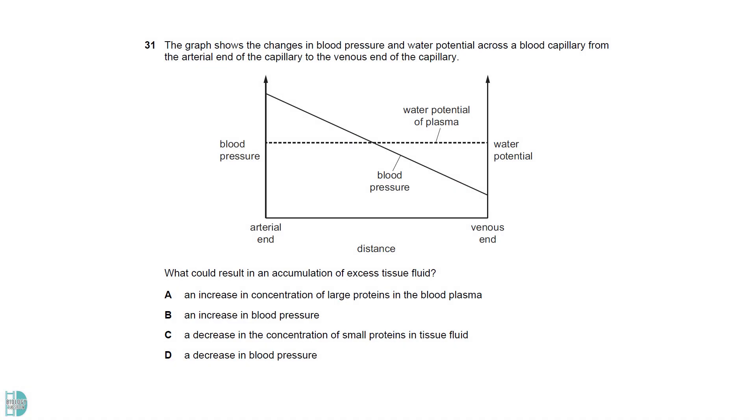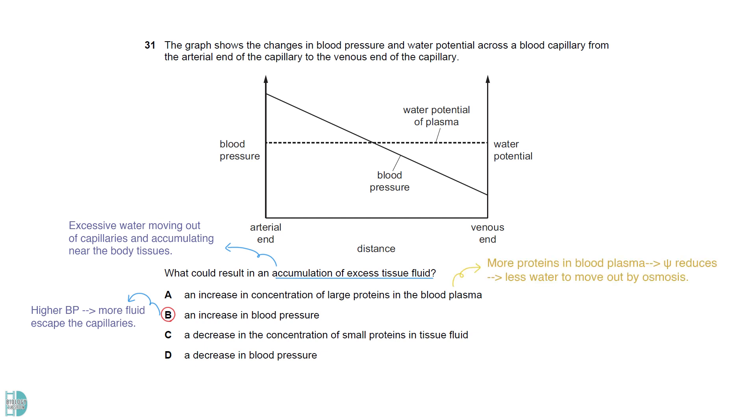Excess tissue fluid is a result of excessive water moving out of capillaries and accumulating near the body tissues. B can cause this to happen as higher blood pressure can force more fluid to escape the capillaries. If there are more proteins in the blood plasma, the water potential of the plasma will be reduced. This causes less water to move out by osmosis. If the tissue fluid has a lower concentration of small proteins, its water potential increases. This will increase the movement of water back into the capillaries by osmosis. D is wrong as it is the opposite of the correct statement.